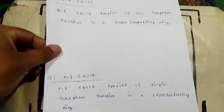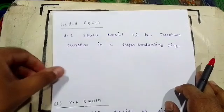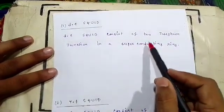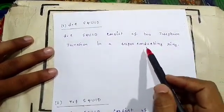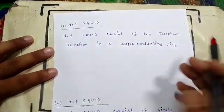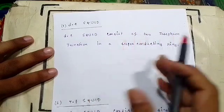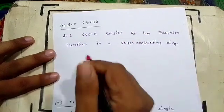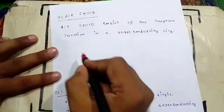So what is DC SQUID? DC SQUID consists of two Josephson junctions in a superconducting ring. Now I will give a schematic diagram of DC SQUID.